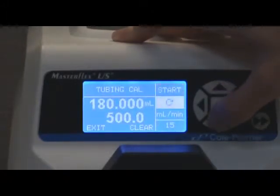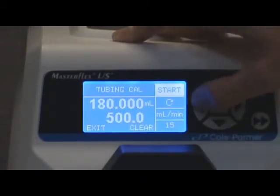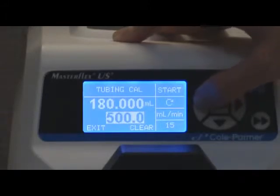Set the drive for the desired flow direction, tube size, and flow rate. It is best to calibrate your tubing at the flow rate that you will be using in your application. This will ensure optimum accuracy when pumping. The calibration volume is fixed and cannot be changed.